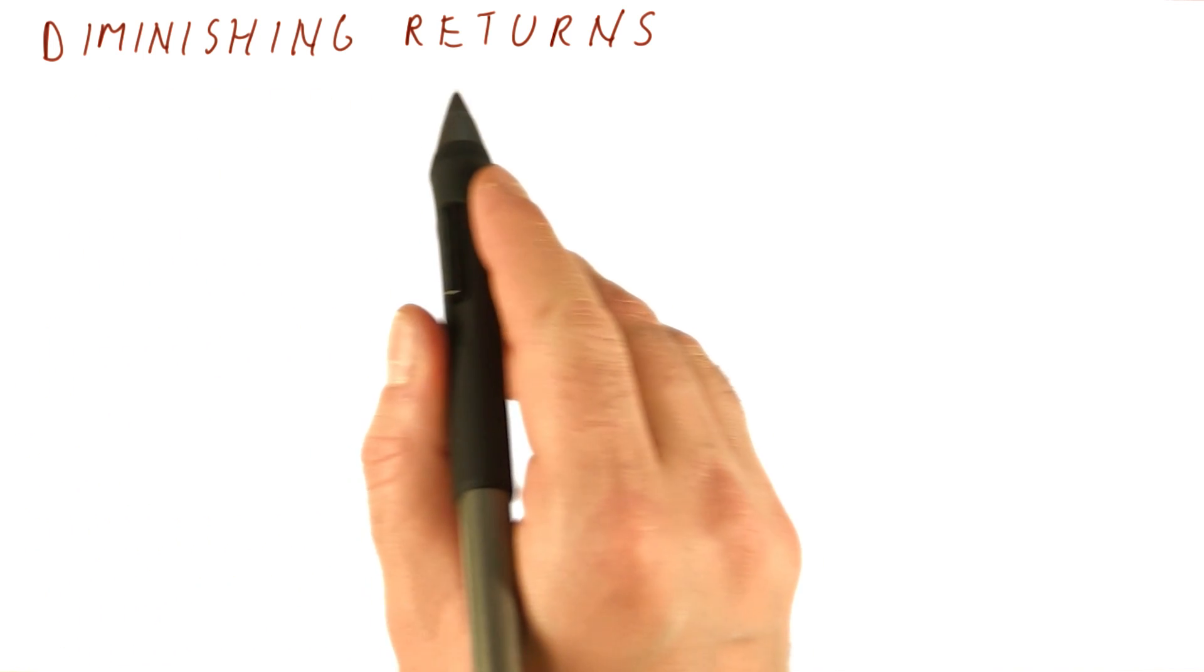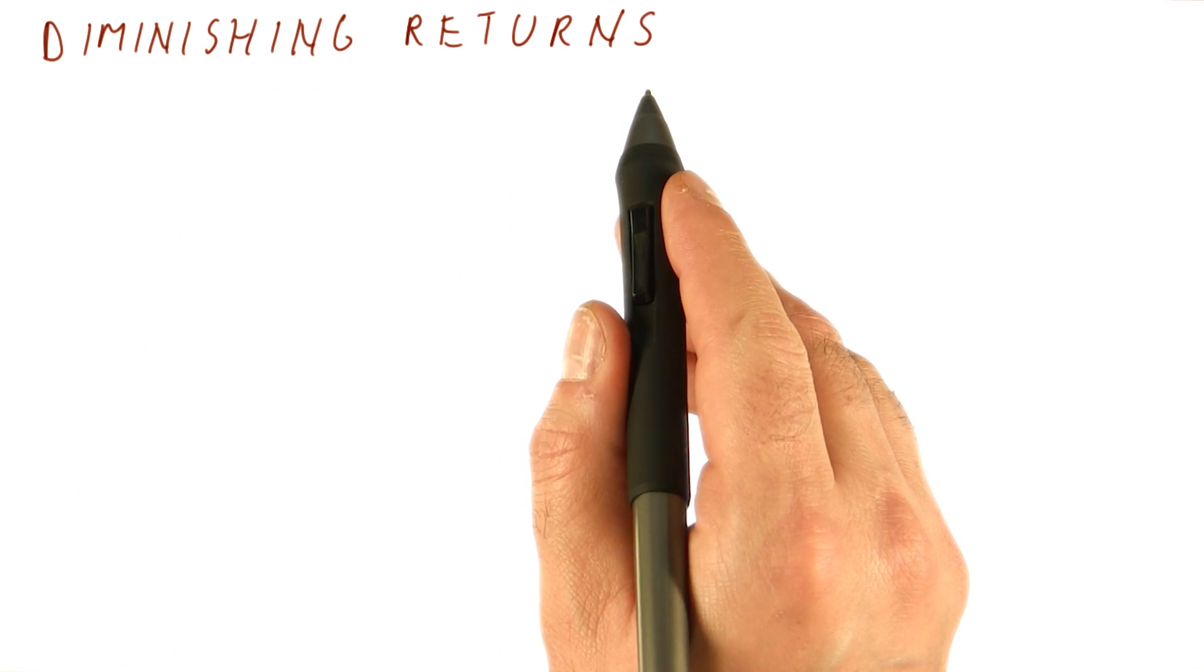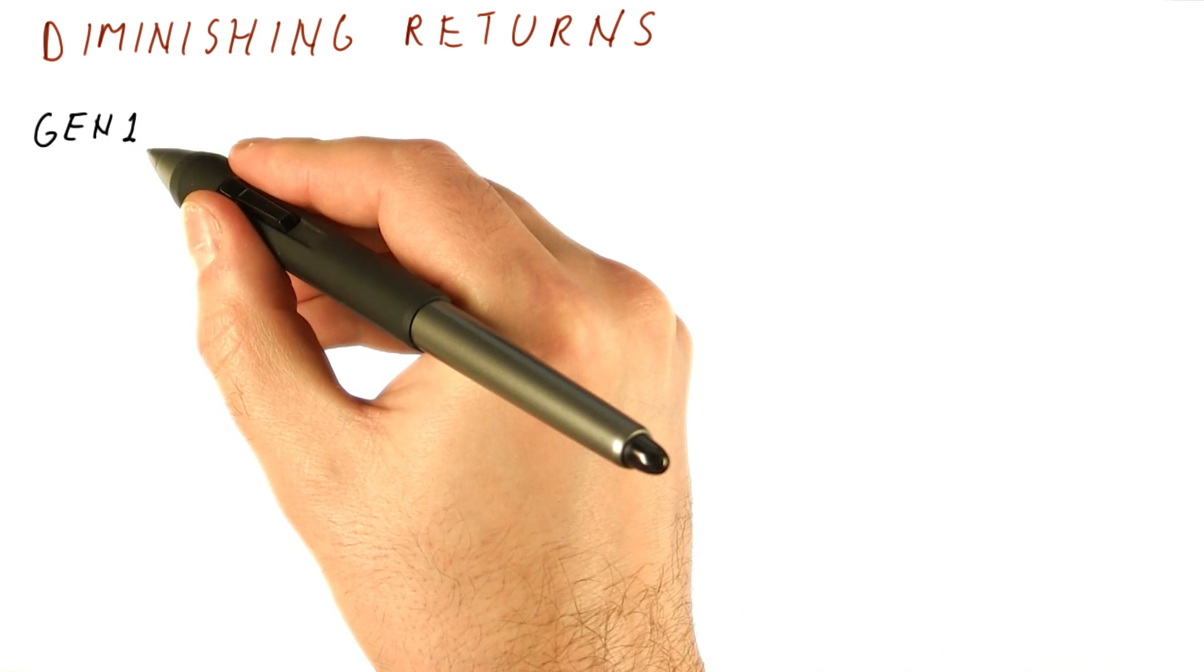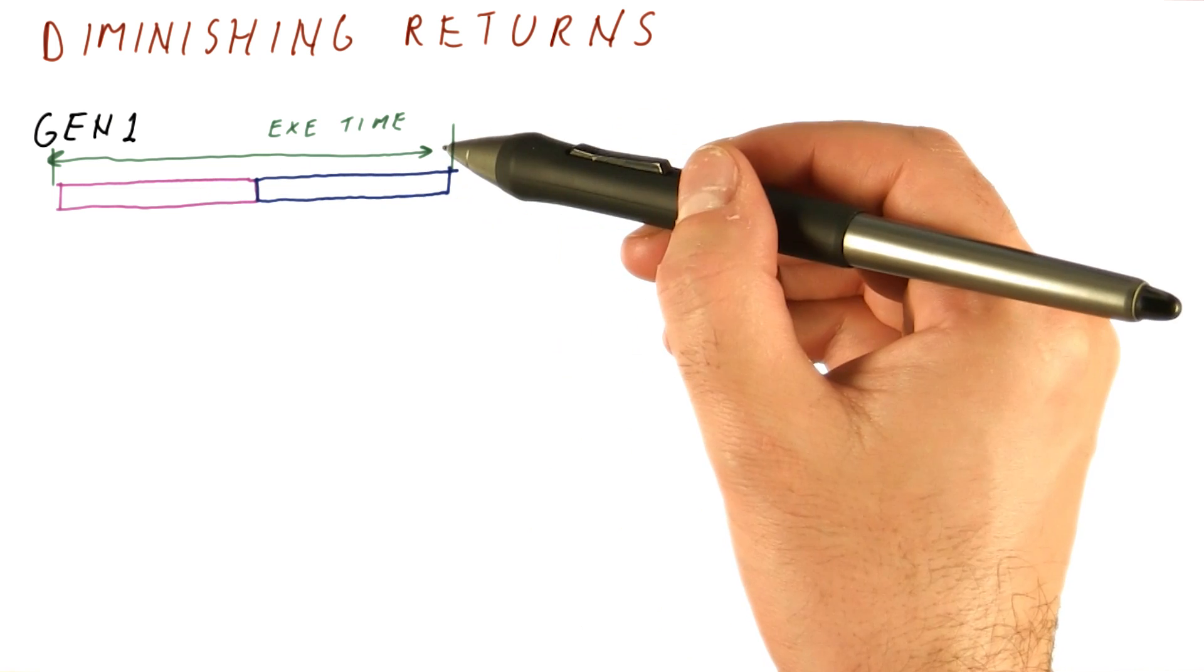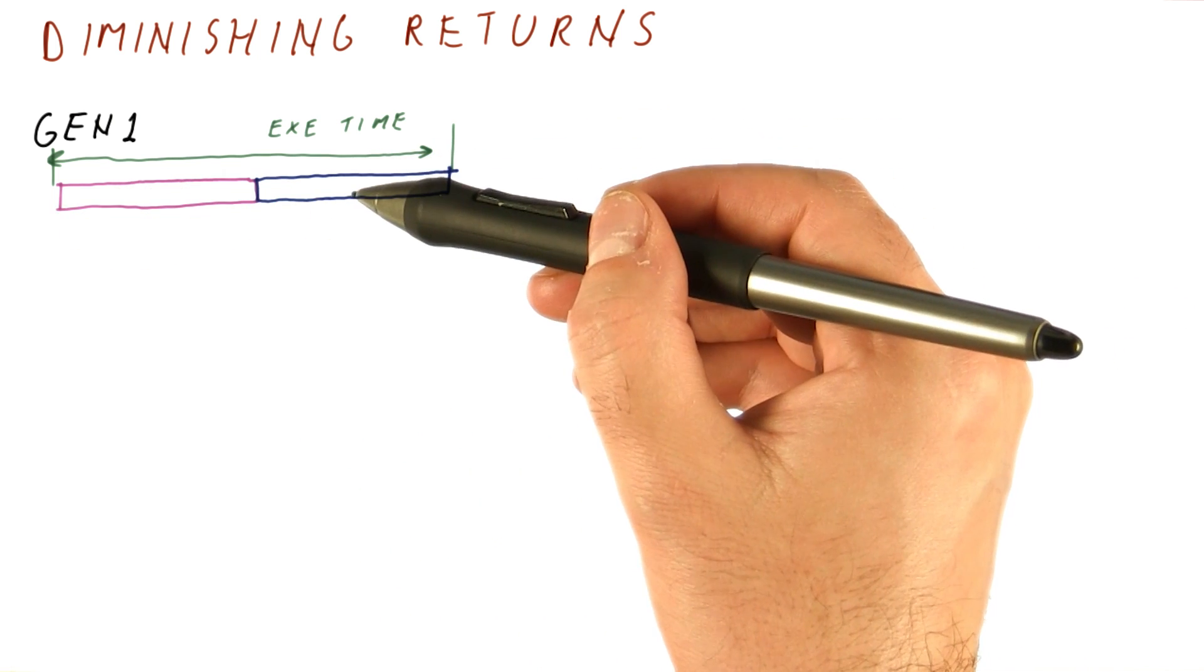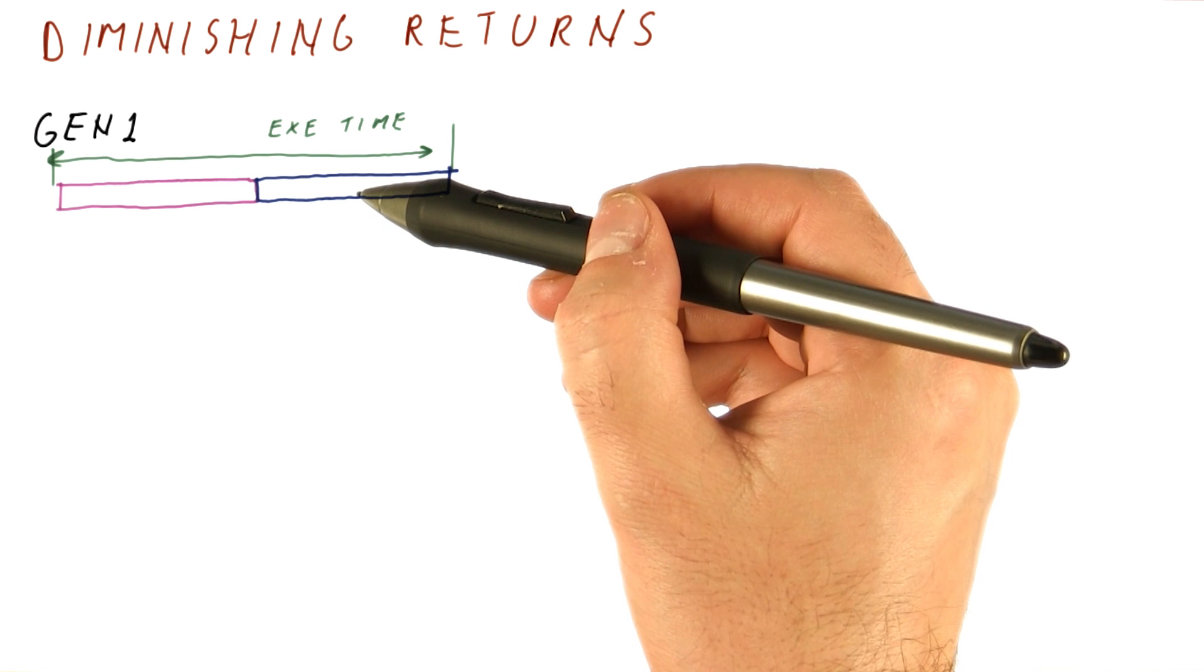A final consequence of Amdahl's law that we will discuss is the law of diminishing returns. Let's say that we had an original processor, which we will call gen 1, in which our execution time can roughly be divided into a purple phase and a blue phase. Each of them takes about half the execution time.